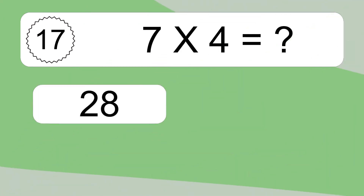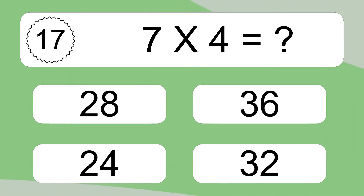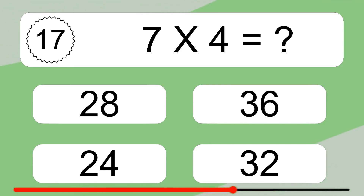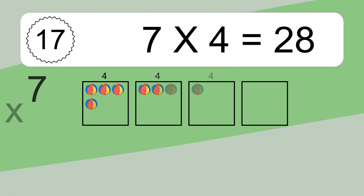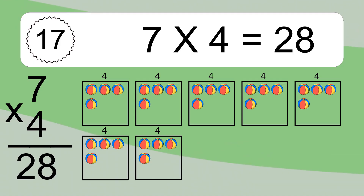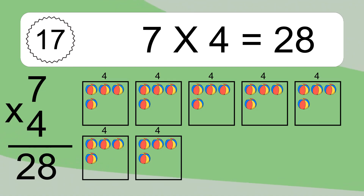7 times 4 equals what? 7 times 4 equals 28. We have 7 boxes, and each box has 4 colorful balls inside. If you count all the balls in all the boxes together, you will have 7 times 4 balls. This equals 28 balls.